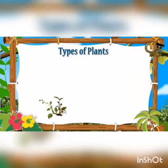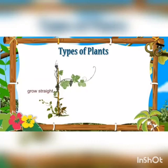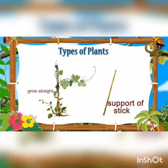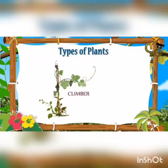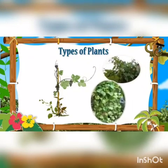Some plants are weak and cannot grow straight on their own. They need support to grow straight. Sometimes they take the support of stakes. Such plants are called climbers. For example, money plant and grapevine.